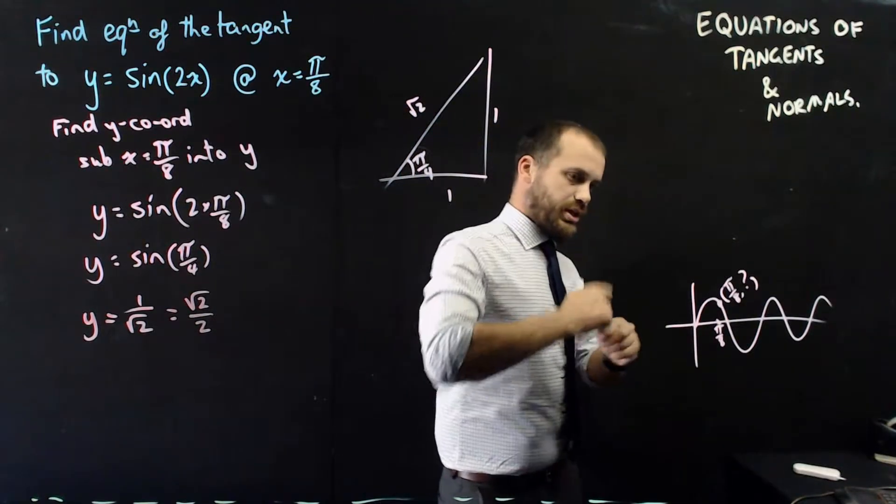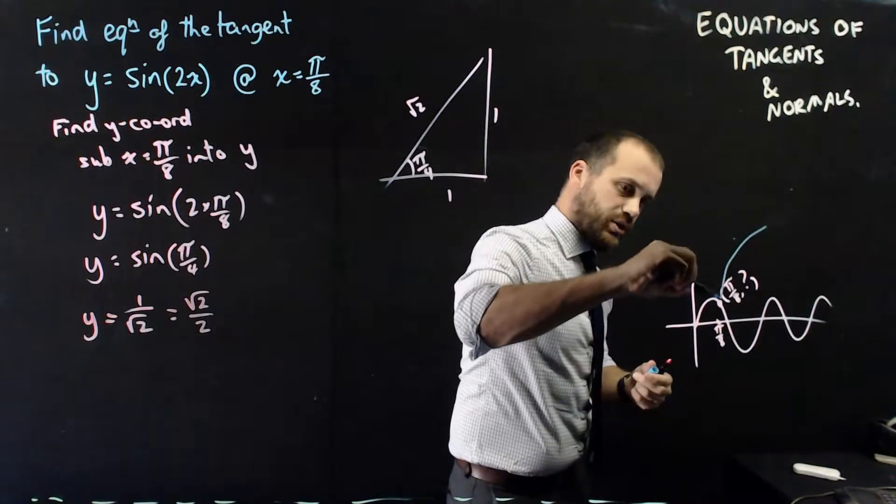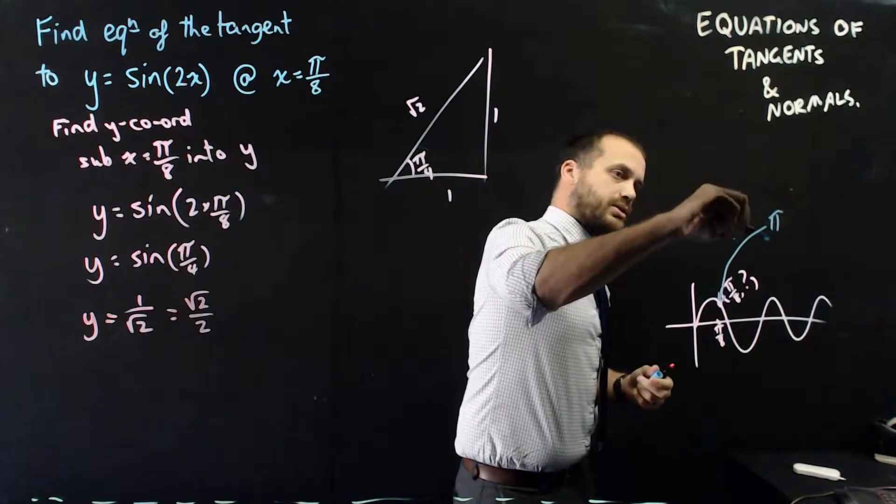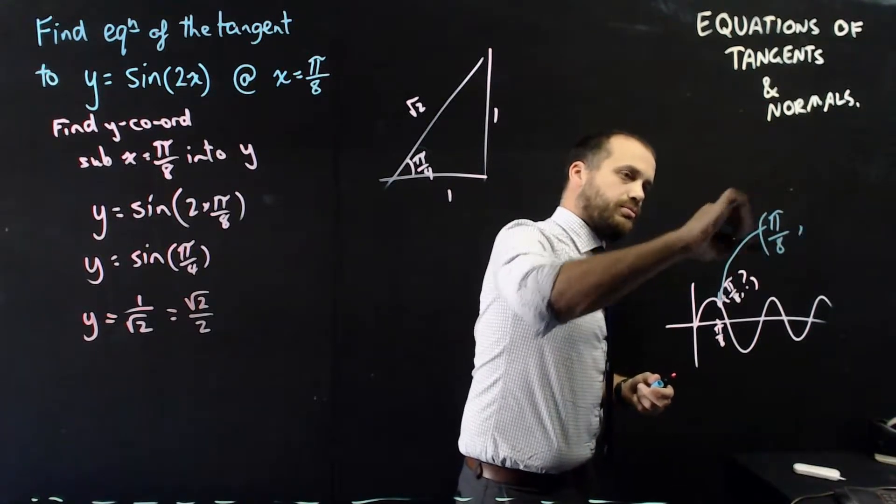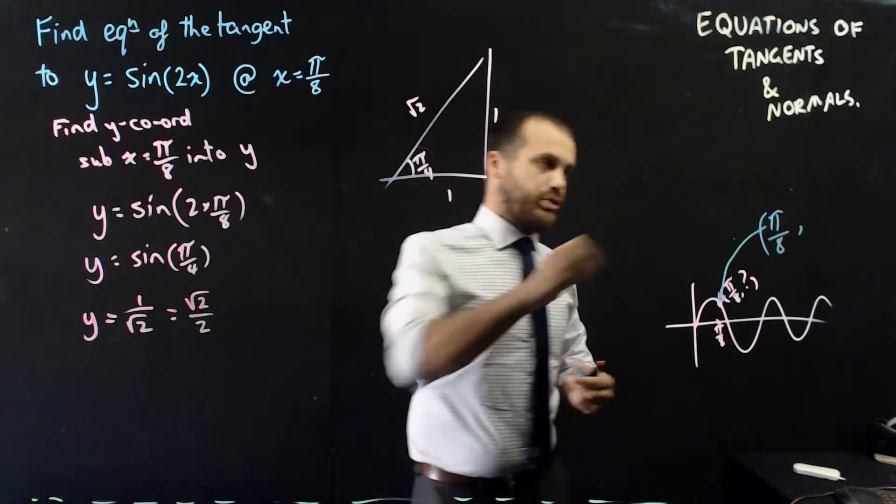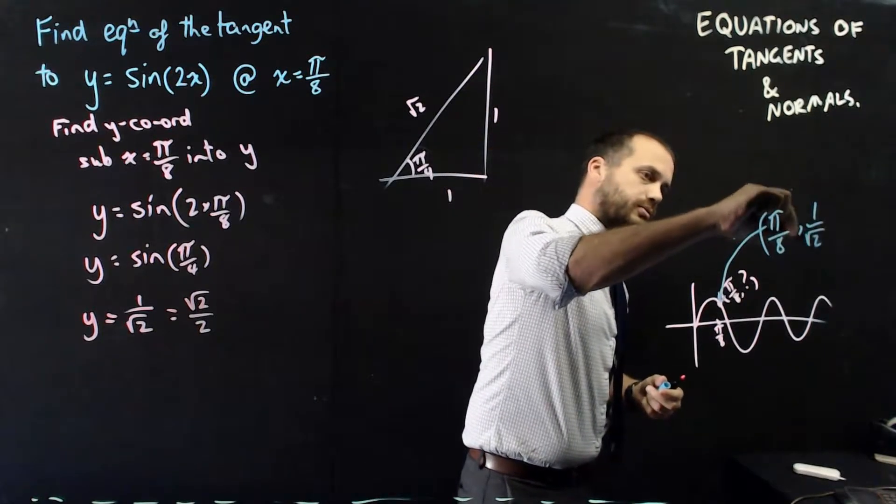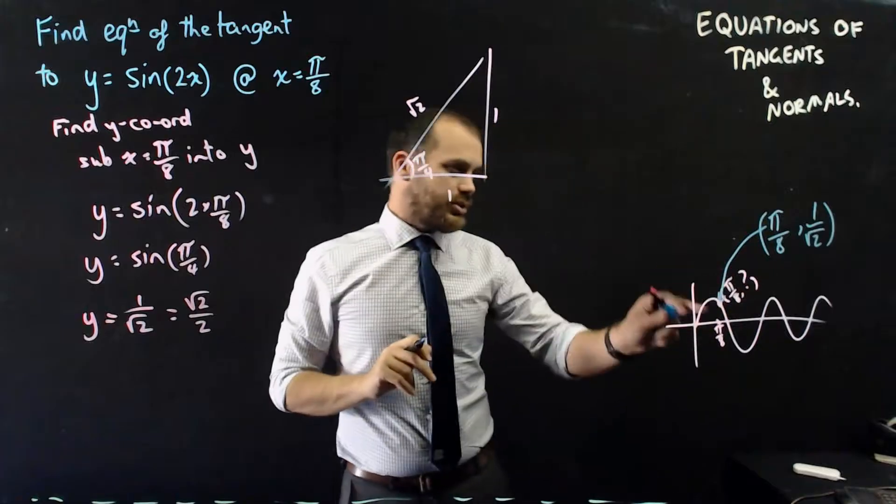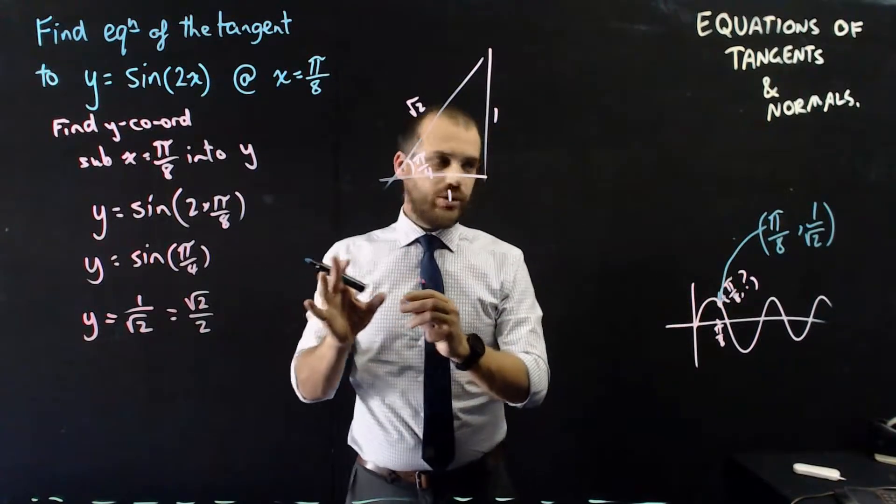That means that I now have a y coordinate. In my drawing here, I can say that I now know that that point is π on 8, bracket, 1 on root 2. I'm pretty good at the moment. I've got a y coordinate.